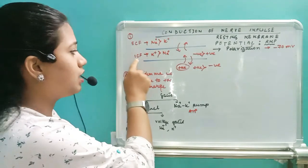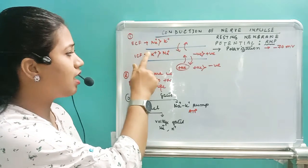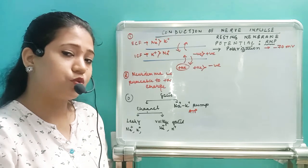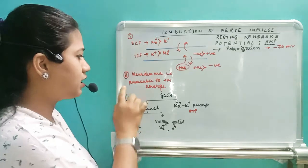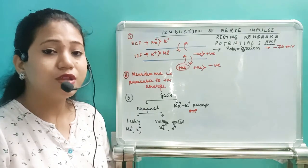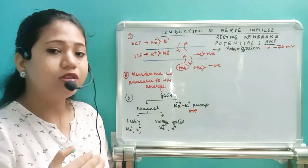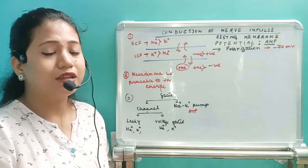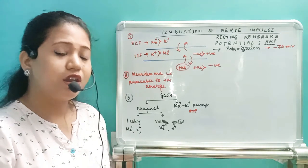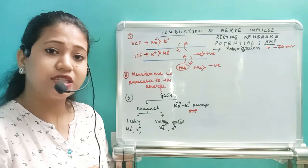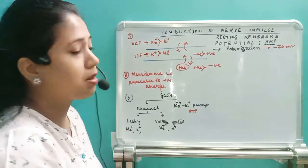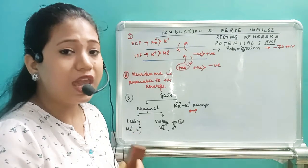So these three points are key. First, ICF — the neuroplasm — has higher concentration of potassium ion and less sodium ion. Outside, ECF has higher concentration of sodium ion and less potassium ion. Second, neurolemma is permeable to only the positive charge. Third, for movement of ions through the neurolemma there are two types of gates: channels — leaky channels and voltage-gated channels — and the sodium-potassium pump. Understanding these three points helps us understand how resting membrane potential and action membrane potential are generated.